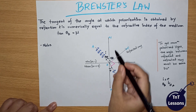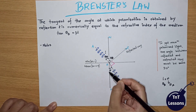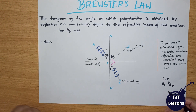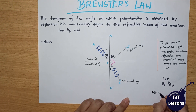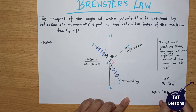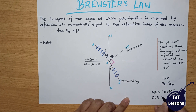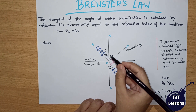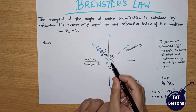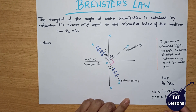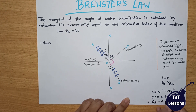The total of theta B and r is 180 degrees. Using cosine, this equals 90 degrees. We use the relation that theta B plus r equals 90 degrees.